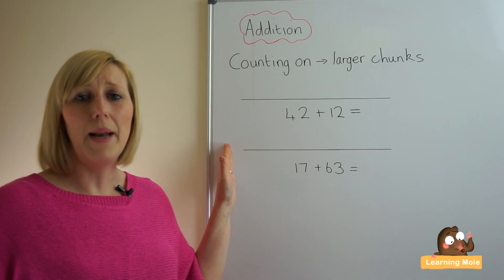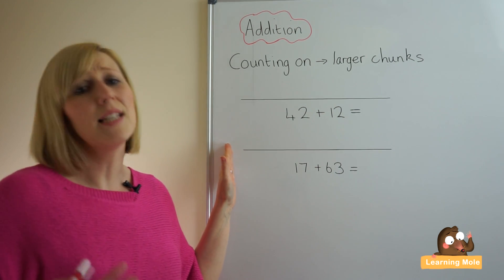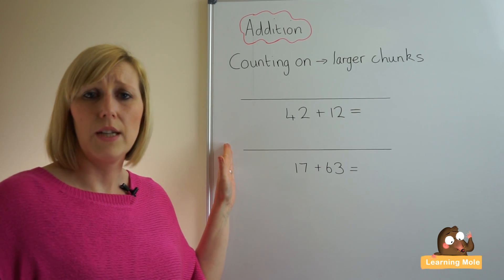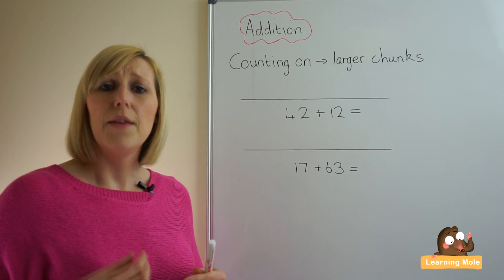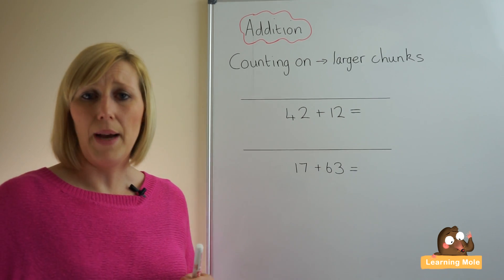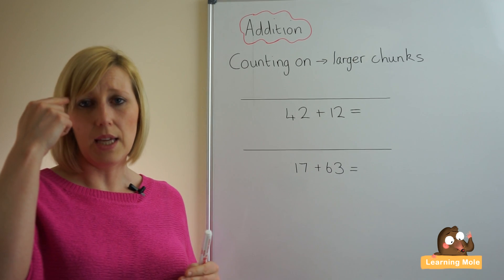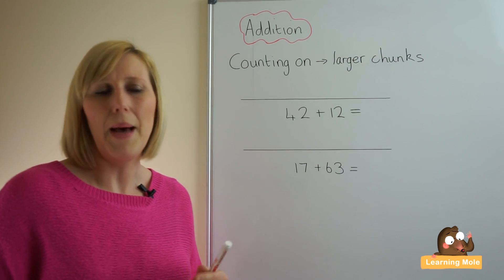Now do remember, I'm using two blank number lines here and this isn't a written strategy, it is a mental strategy. But what we're using the blank number lines for is to show the process that you might go through in your mind, the steps that you will go through when you're thinking through this in a mental capacity.